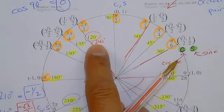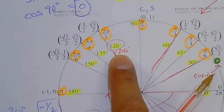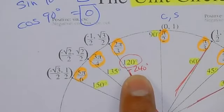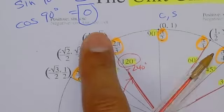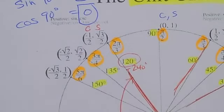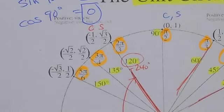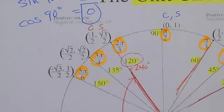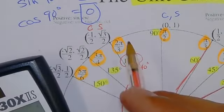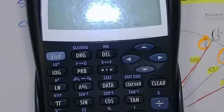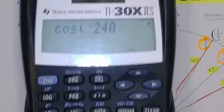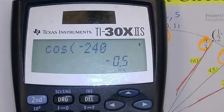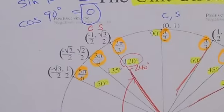So what is sine and cosine of negative 240? Look at 120 degrees on the unit circle. Remember: the first coordinate is cosine, the second is sine. What is cosine of negative 240? Let's check — cosine of negative 240. There it is — you guys see it.